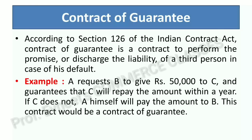A Contract of Guarantee is a contract to perform a promise and discharge the liability of a third person in case of his default. If someone has defaulted — if someone has not made payment on time — then the person who gave the guarantee will pay on their behalf. So A himself will pay the amount to B. This is a Contract of Guarantee.